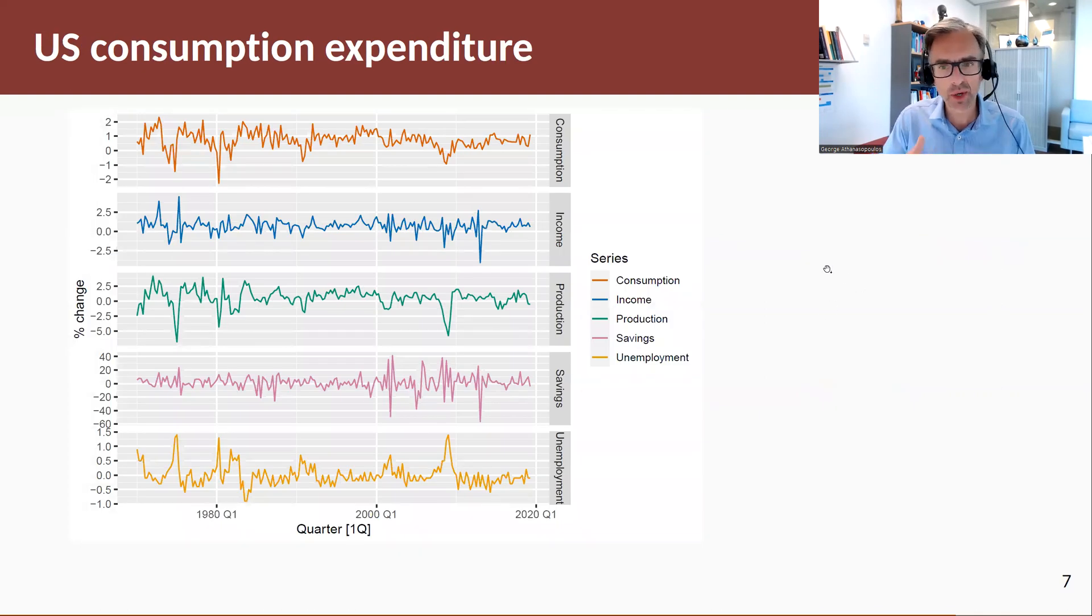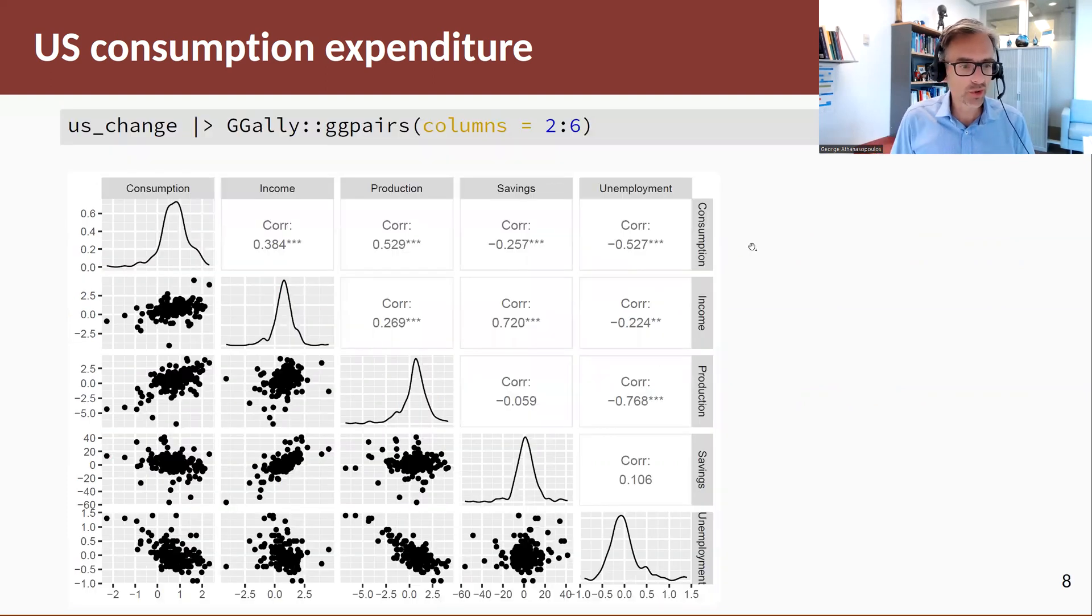Let's have a look at another example. Now we're going to look at exploring relationships between more than two variables. We have US data, we have US consumption expenditure, income, production, savings, and unemployment, and we want to see the relationships between these. We might be interested in modeling some of these relationships. A useful function to do that is to use the ggpairs in the ggally package, so here we're going to grab from our us_change tsibble columns two to six, which is consumption, income, production, savings, and unemployment.